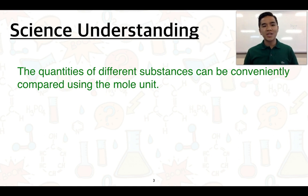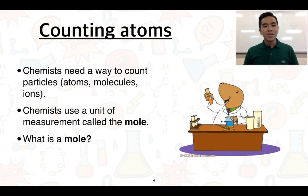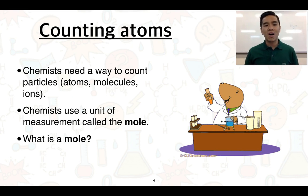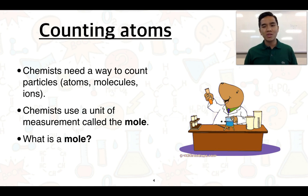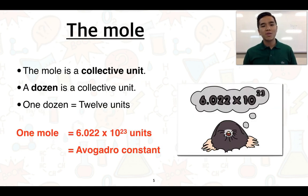The first science understanding is that the quantities for different substances can be conveniently compared using the mole unit. Chemists need a way to count particles, and this can consist of atoms, molecules, and ions. Chemists use a unit of measurement which we call the mole — but what is the mole?